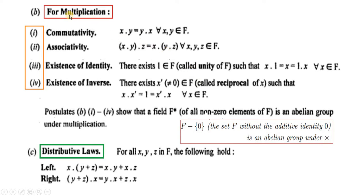With respect to multiplication, set F should have commutative property: x·y = y·x. This is the commutative property. By taking any three elements, this is the associative property.